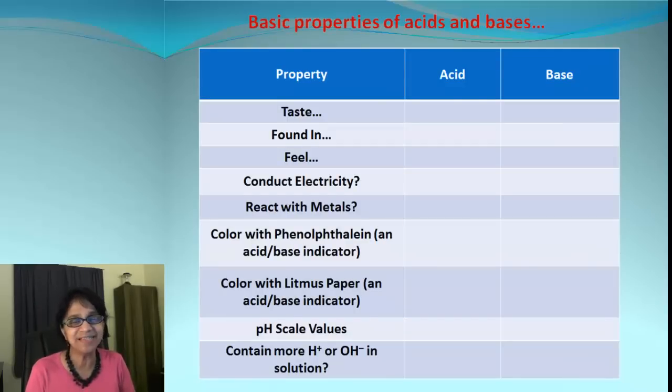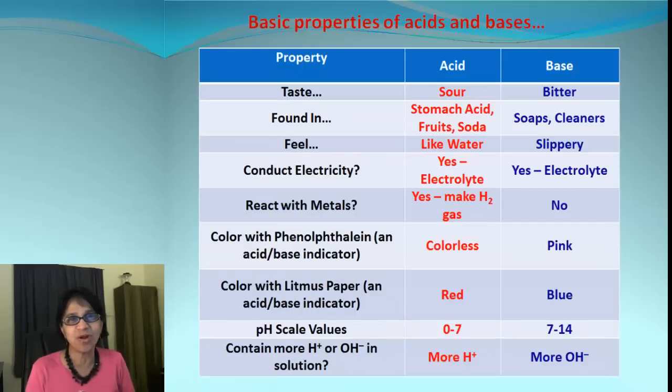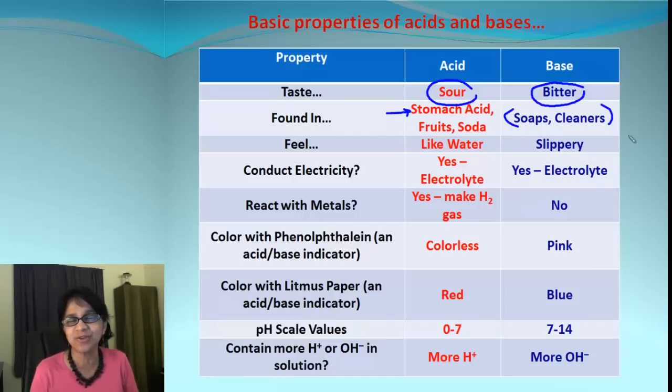These are the properties which are different for acids and bases. Some are physical properties and some are chemical properties. So what are those? Look at the taste. Taste is sour for acid, as you know. Bases are bitter. Where are they found? We get acids in stomach acid and bases in soaps and cleaners.